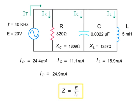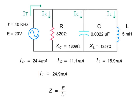Finally, we can calculate the total impedance by dividing the source voltage by the total current, which is 20 volts divided by 24.9 milliamps, or 803 ohms.